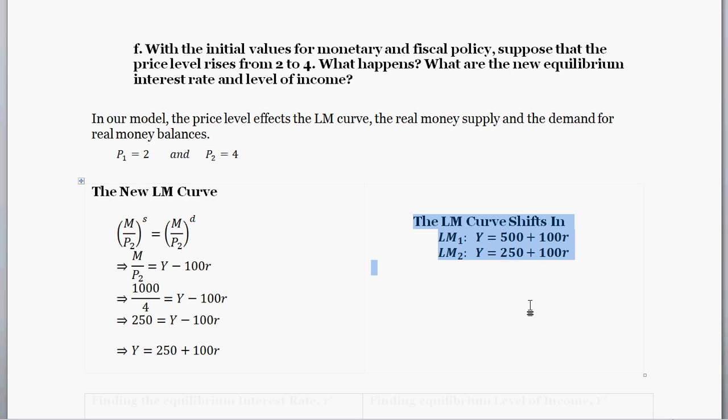Building off, I think part A or part B from the previous question, the initial LM curve was this Y is equal to 500 plus 100R. And now the LM curve is Y equals 250 plus 100R. So the LM curve has shifted. So it's shifted to the left. So that's our new LM curve.